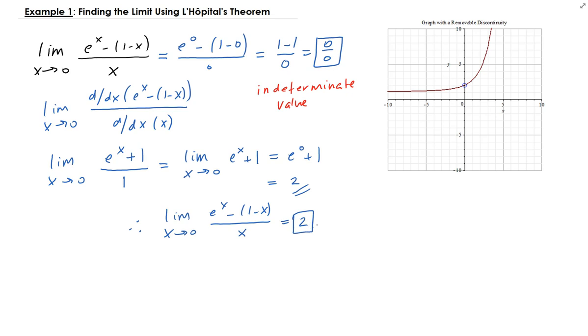That's what you see here to the right in this graph. Since x approaches 0 from both sides, you can see that it's approaching the y value of 2.